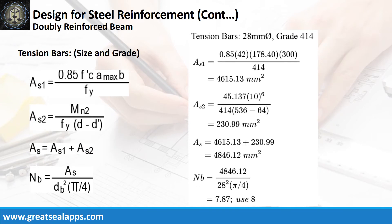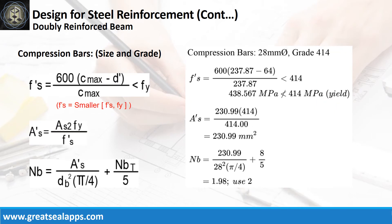The area of steel for stress block AS1 equals 4615.13 square millimeters, and the area of steel AS2 equals 230.99 square millimeters, and the total area of steel for tension bars is 4846.12 square millimeters, and the number of bars for 28-millimeter bar is 8. The stress for compression bars is 414 MPa, for area of steel of 230.99 square millimeters, and the number of bars is 2.